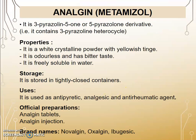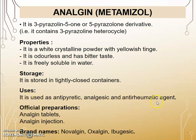The next drug is Analgin, also called Metamizole. It is a 3-pyrazolin-5-one or 5-pyrazoline derivative, meaning it contains a 3-pyrazoline heterocycle. Property: it is a white crystalline powder with a yellowish tinge, odorless with a bitter taste. It is freely soluble in water. Storage: stored in a tightly closed, light-resistant container. Uses: it is used as an antipyretic, analgesic, and anti-rheumatic agent. Official preparation: Analgin tablet and Analgin injection. Brand names: Novalgin, Oxalgin, and Ibugesic.